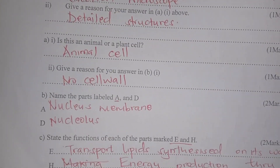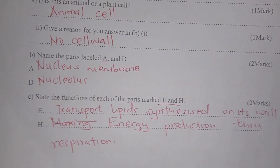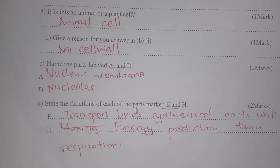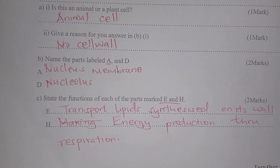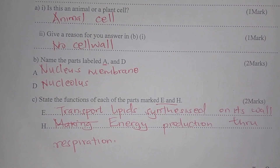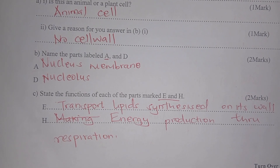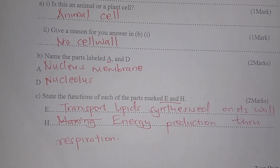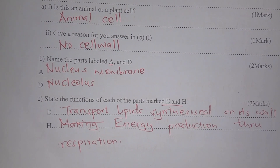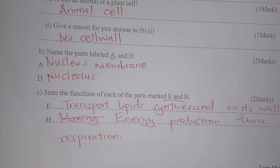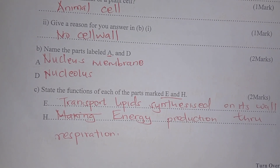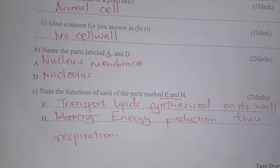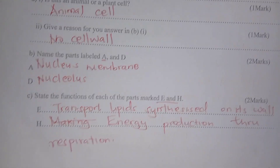State the function of parts E and H. Part E is for transport of lipids synthesized on its walls — that means it is the smooth endoplasmic reticulum. Part H is for making energy — it is the powerhouse of the cell, responsible for energy production.